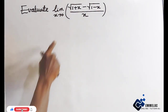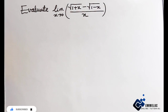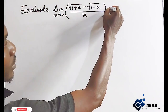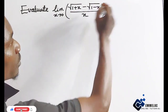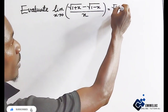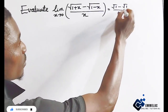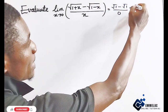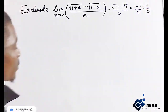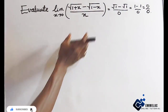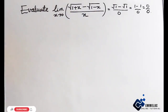Looking at this, if you plug in the value of x into the function, you get the square root of 1 minus the square root of 1, all over 0 — which gives us 1 minus 1 all over 0. So this is an indeterminate form, and we need to break down these terms into the simplest terms.